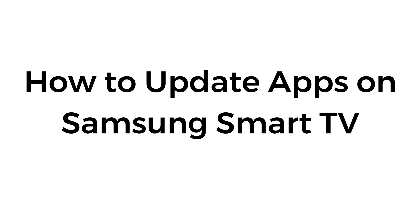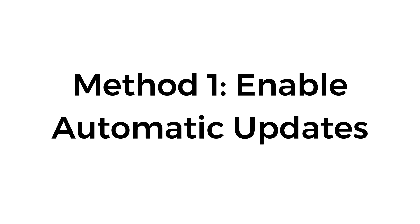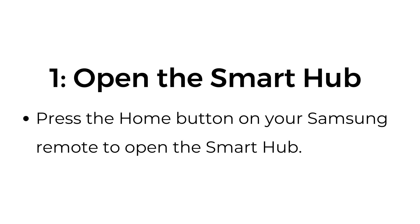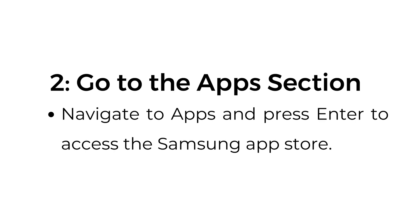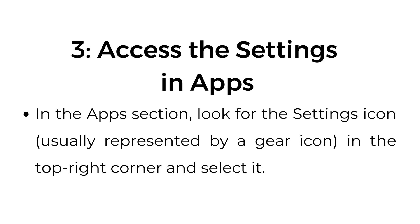How to update apps on Samsung Smart TV. Method number 1: Enable automatic updates. Step 1: Open the Smart Hub — press the Home button on your Samsung remote to open the Smart Hub. Step 2: Go to the Apps section — navigate to Apps and press Enter to access the Samsung App Store.